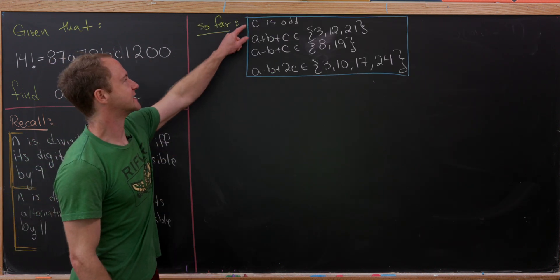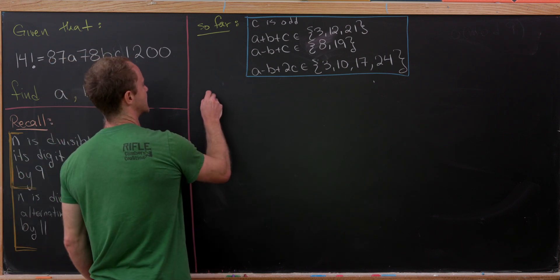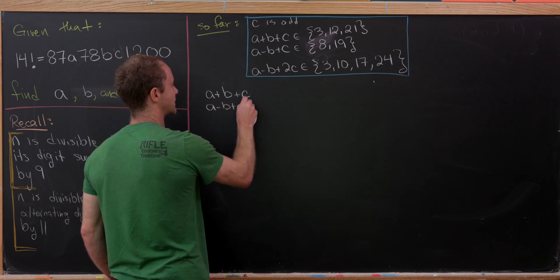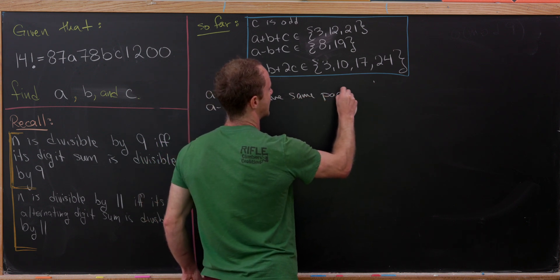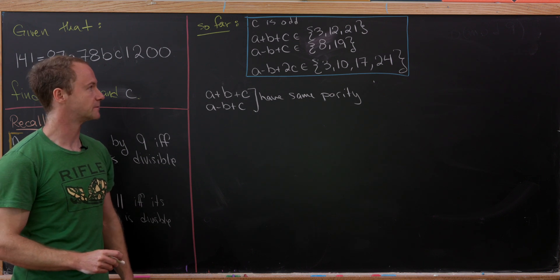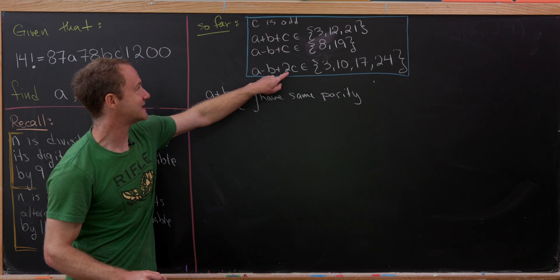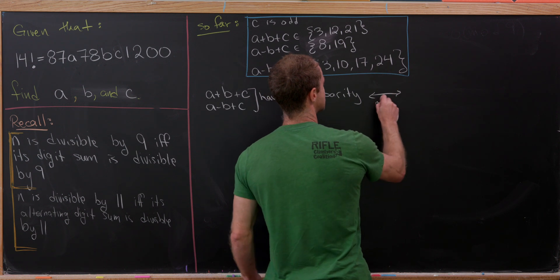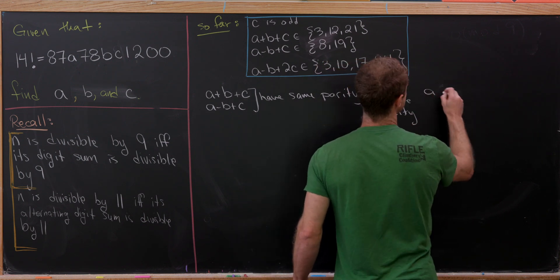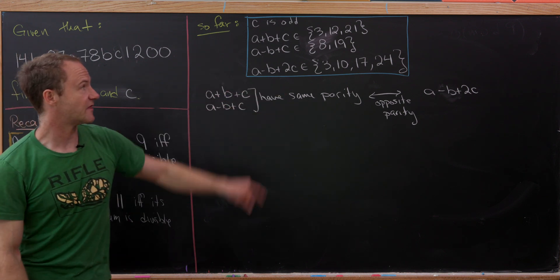So to summarize where we are: C is odd, and we have A + B + C ∈ {3, 12, 21}, A − B + C ∈ {8, 19}, and A − B + 2C ≡ 3 (mod 7). Now let's think about parity. A + B + C and A − B + C have the same parity, since +B and −B are congruent mod 2. But A − B + 2C differs from A − B + C by adding C, which is odd, so it has the opposite parity to the first two.